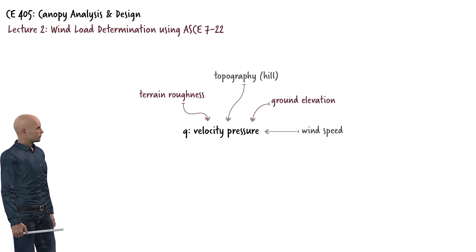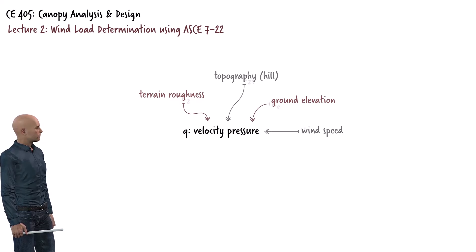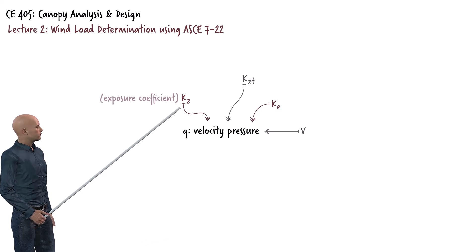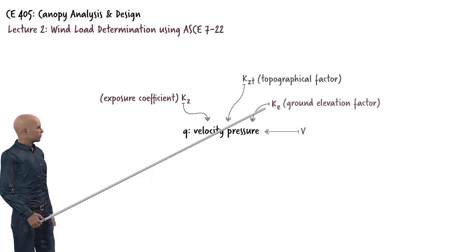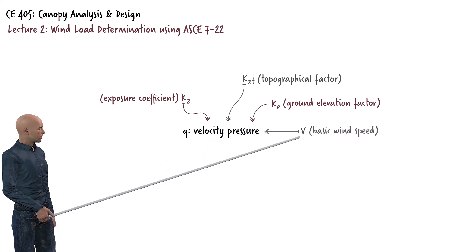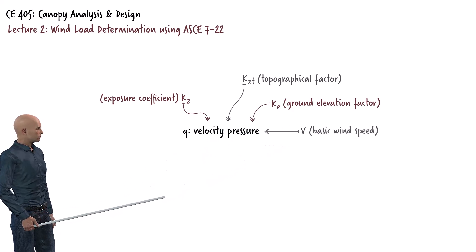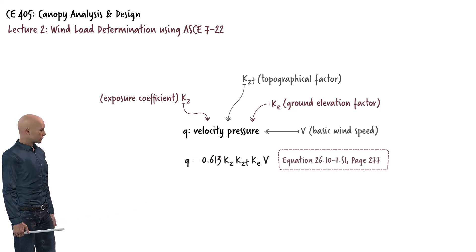Now let's dive deeper into wind velocity pressure, Q, and look at what it depends on. According to ASCE 7-22, there is a coefficient for each of these attributes: the exposure coefficient, KZt the topographical factor, the ground elevation factor, and V the basic wind speed in meters per second. Using these coefficients, we can write the equation for Q, which gives us velocity pressure in newtons per square meter.